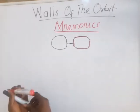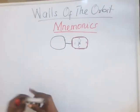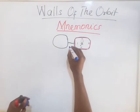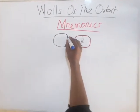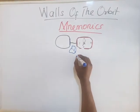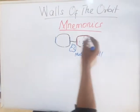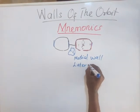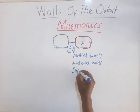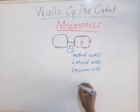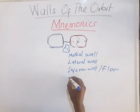So the eyeball sits in the orbit. The top part is the roof, down there is the floor, this side close to your nose is the medial wall, and this side far away from the nose is the lateral wall. Down is the inferior wall, and the top is the superior wall — that is the roof.